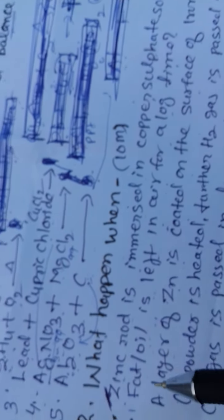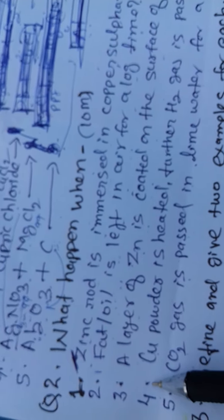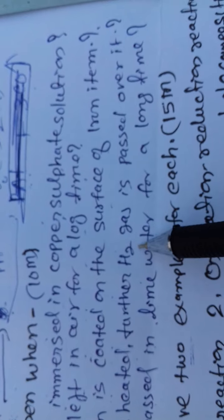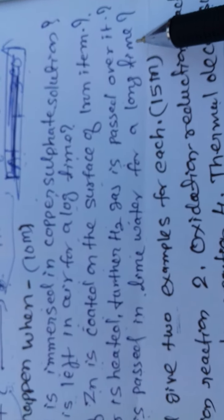Third: a layer of zinc is coated on the surface of iron item. One mark for heading, second mark for explanation. Number fourth: copper powder is heated and further H2 gas is passed over it. And last: CO2 gas is passed in lime water for a long time.